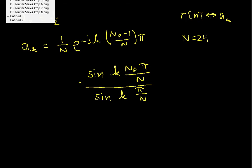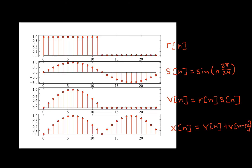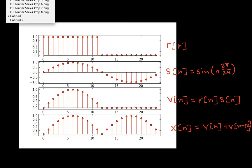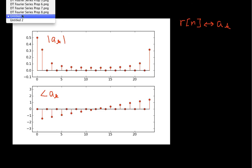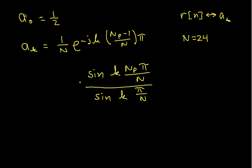Now, if we go back to our picture here, you can see that the pulse width here is 12 samples, and then it's 0 for 12 samples. So Np is 12. And again, N is 24.